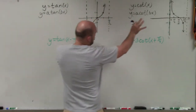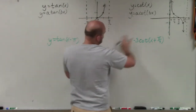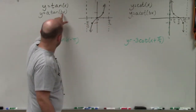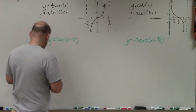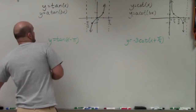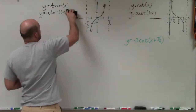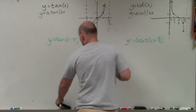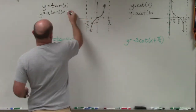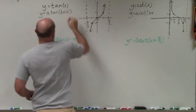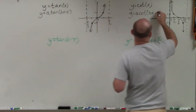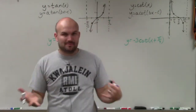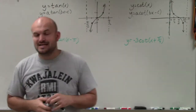What I have here is the parent graph of tangent and the parent graph of cotangent. I am not going to be doing any change of periods. You can see that I do not have any b, or my b is 1 in this case, so I'm not going to be doing any changing of the period. However, in my cotangent I do have an a, which is not going to affect amplitude, because there is no amplitude for cotangent and tangent.